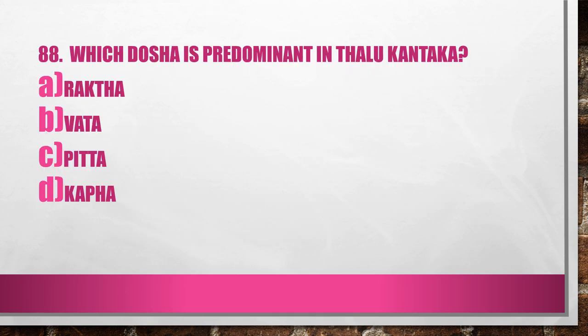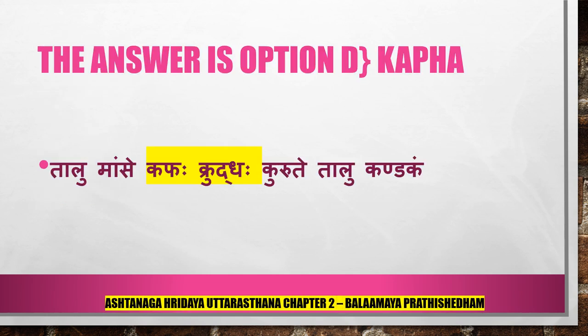Question 88. Which dosha is predominant in Thalu Kandaga? A. Recta, B. Vada, C. Pitta, D. Kabha. Thalu Mamsa — Kabha Kruddha causes Thalu Kandaga. Reference is Ashtanghradaya Uttarastana Chapter 2, Balamaya Pradishitam. The answer is Option D, Kaba. Thalu Mamsam is due to Kroda of Kaba.